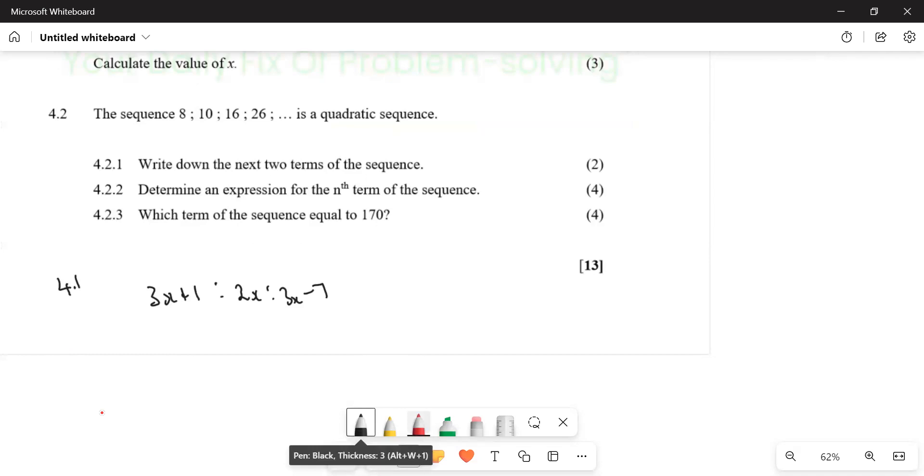T2 minus T1, so term number 2 minus T1, so it's 2x minus into bracket 3x plus 1, 3x plus 1 like this. Then T3 minus T2. Let me write it like this so that it is 2x and then this one is 3x minus 7.